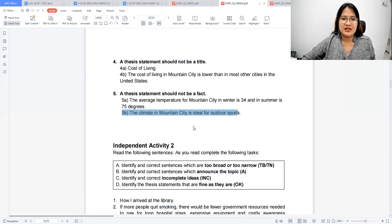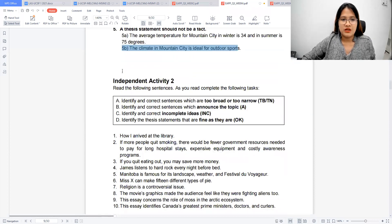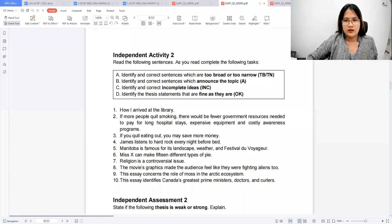So for example, independent activity 2, you have to identify if it's too broad, too narrow, if it's a topic lang, incomplete ideas, and if they're fine or they're just okay. So this could be a little. Okay. Next. So let's start.